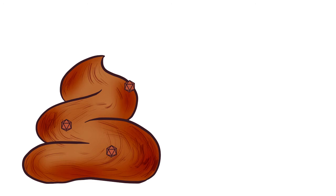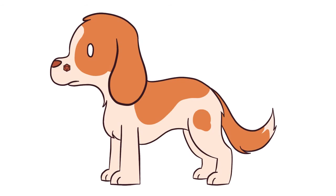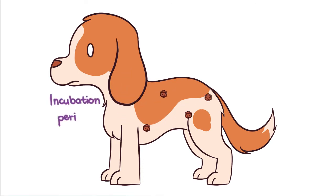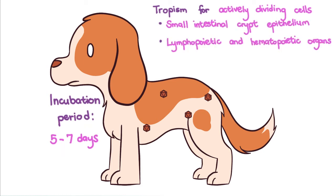Viral entry occurs oronasally, after which viral replication happens in the pharyngeal lymphoid tissue, with subsequent viremia and hematogenous spread. The incubation period generally lasts between 5–7 days. Being a parvovirus, it has a tropism for actively dividing cells: the small intestinal crypt epithelium, lymphopoietic and hematopoietic organs, and the myocardial tissue of developing puppies.